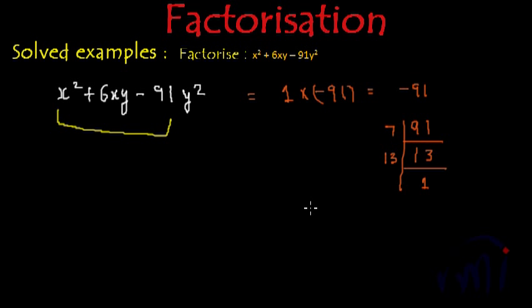And the factors of minus 91 can be either minus 7 and 13 or minus 13 and 7, right? Both of these will give us minus 91, right? But which pair of factors give us 6? So minus 7 plus 13 actually gives us 6, right?